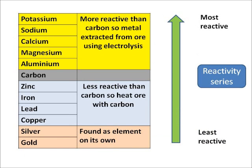This bit is all about how we extract different metals from their ores. This is a reactivity series. The most reactive metal on this table is potassium and the least reactive is gold. Silver and gold we know we find as elements on their own, so they're out of the equation. But then we've got all the elements from potassium down to copper.